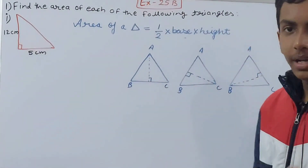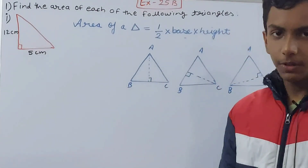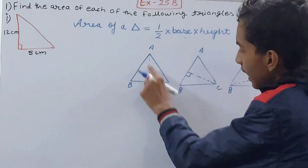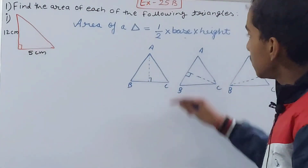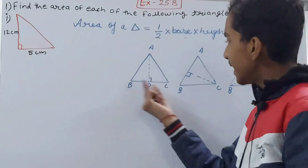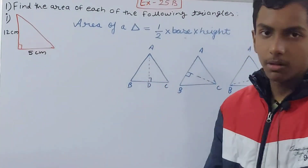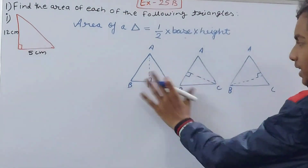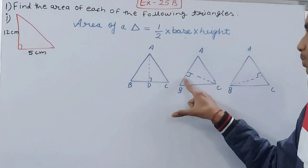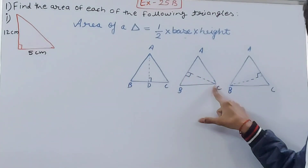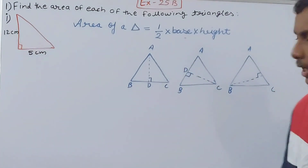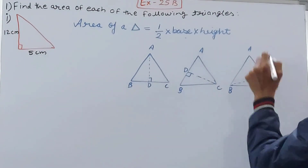The height is the perpendicular distance between any point on the figure and the side opposite to it. So you can see point A — the perpendicular distance from A to side BC, let's call the foot D, so AD is the height and BC is the base. Sometimes the perpendicular is drawn from C onto AB, landing at D — then CD is the height and AB is the base. Similarly, BD is the height and AC is the base.